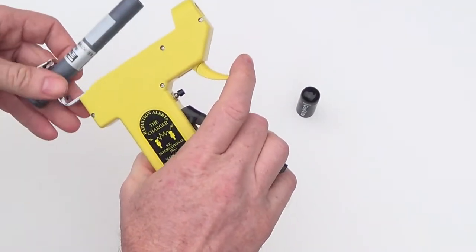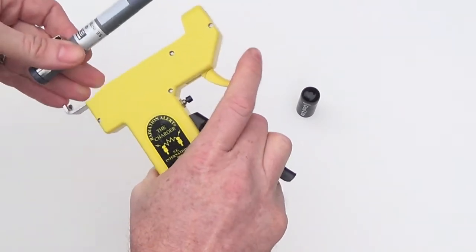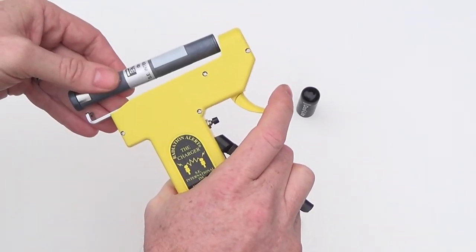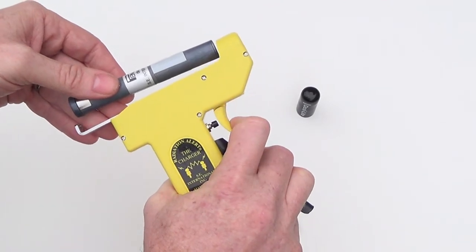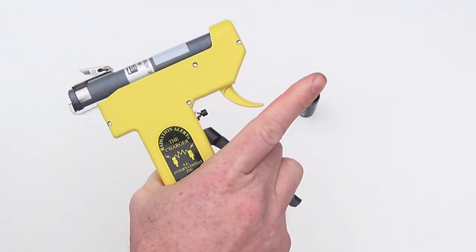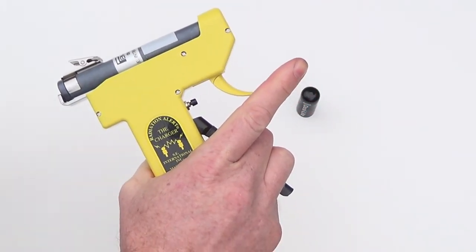To engage into the charger, simply adjust the clamp to a length slightly less than the full length of the pen dosimeter itself. Then, when you pull the trigger, the clamp will extend backward, allowing room to engage the pen dosimeter. Release the trigger and it grabs the pen nice and snug for charging.